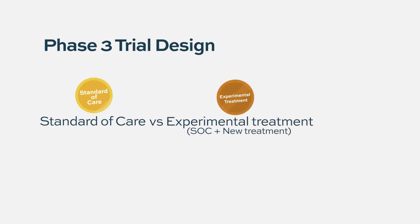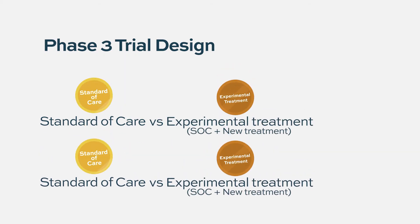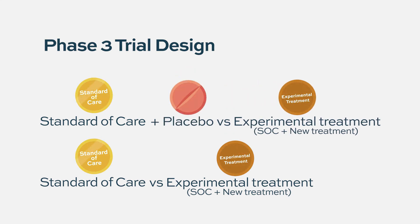In a phase three study, the minimum that a myeloma patient would get would be the standard of care, compared against the standard of care plus a drug. There are some myeloma studies where the patient gets the standard of care plus a placebo, but even in that placebo group the patient is still getting the treatment they would get if they weren't on a study. That standard of care is then compared to the new treatment.